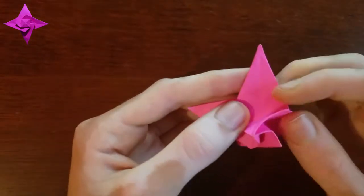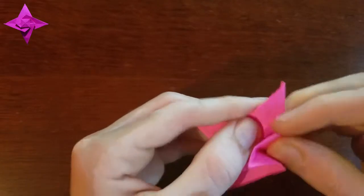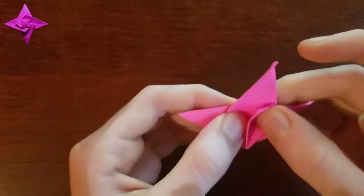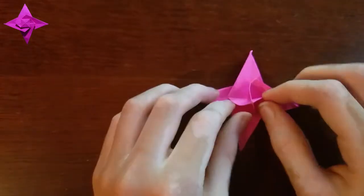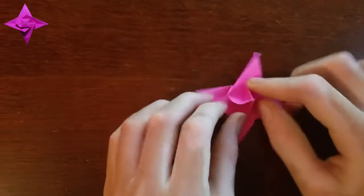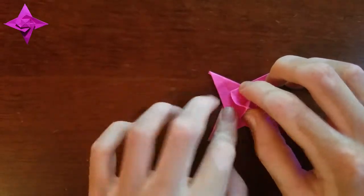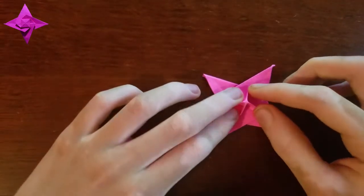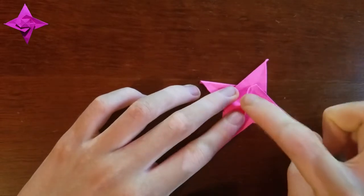And then do that with all these flaps, trying to make it symmetrical, and you'll probably have to adjust it and it won't lie flat yet. And we're just going to hold all these in place at the same time and then just squash this tip.